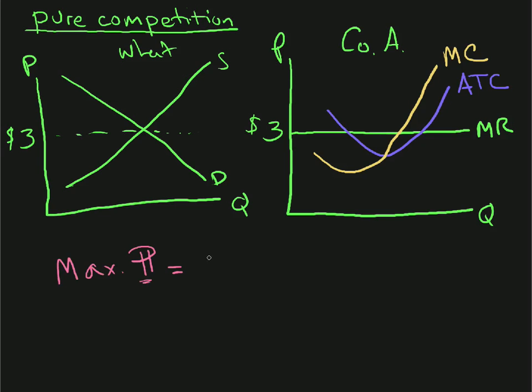So step one, find where marginal revenue equals marginal cost. Where is that? Well, here's marginal cost, here's marginal revenue. This is where they're equal right there.